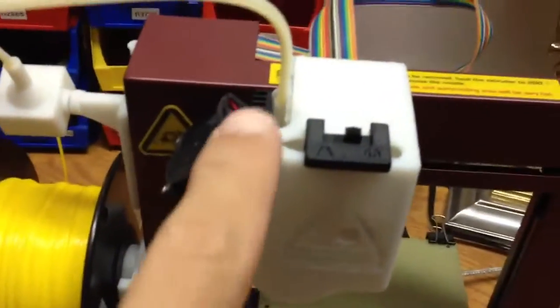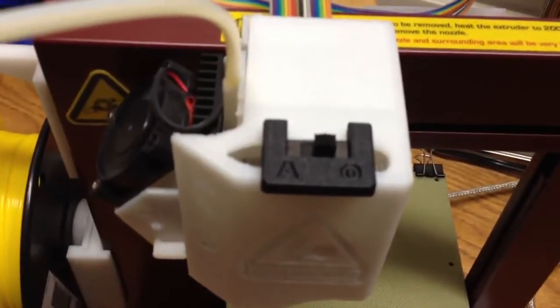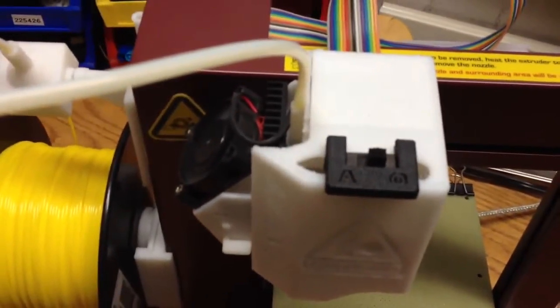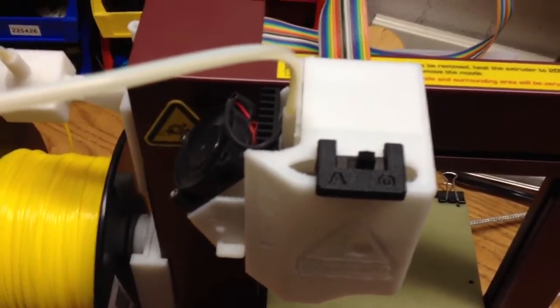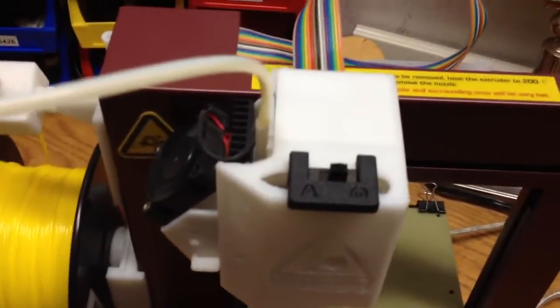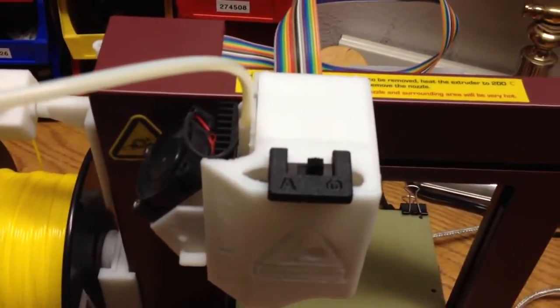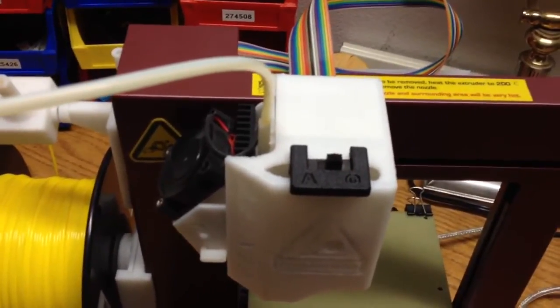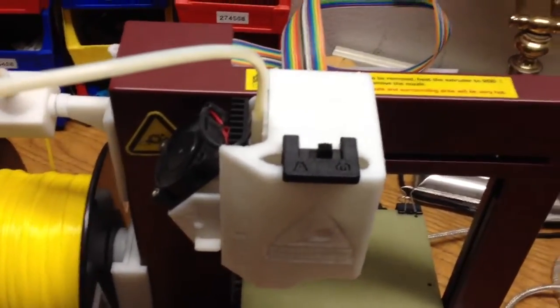This switch right here, you notice there is an A and an O on it. That stands for A for Affinia and O for Octave. This is a switch you can buy for, I believe it was 20 bucks at Octave.com.